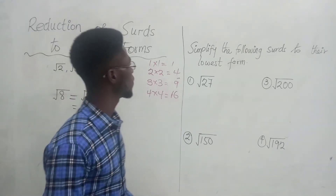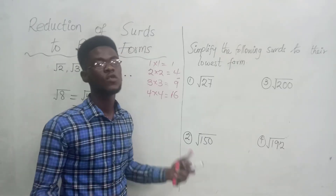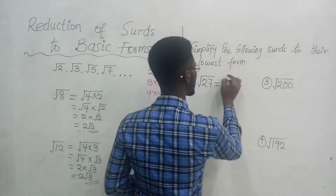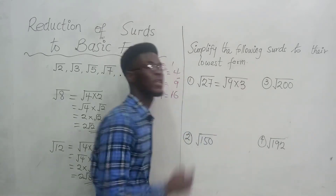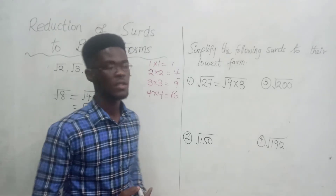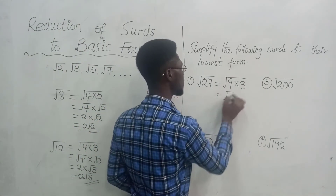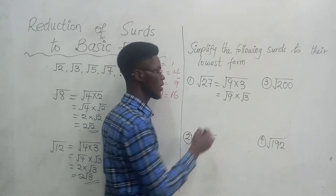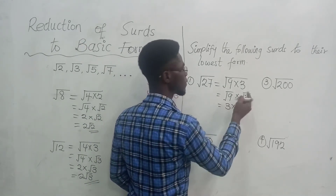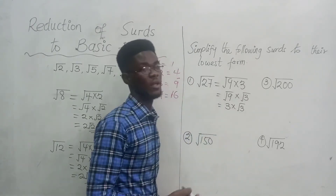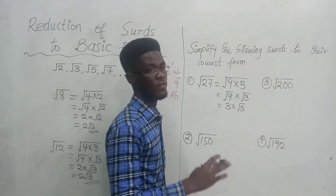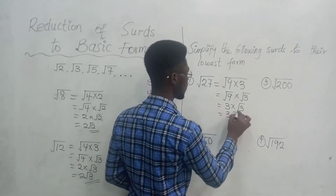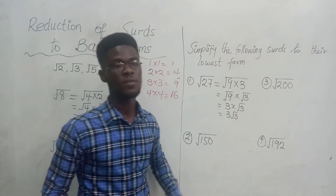Let's try the square root of 27. Which two numbers are we going to multiply to get 27? The two numbers are 9 and 3. 9 times 3 is 27, and 9 is a perfect square. Each of them picks the square root sign: square root of 9 times square root of 3. Square root of 9 simplifies to 3. The square root of 3 is already in simplest form, so we can't reduce it further. The answer is 3 root 3.